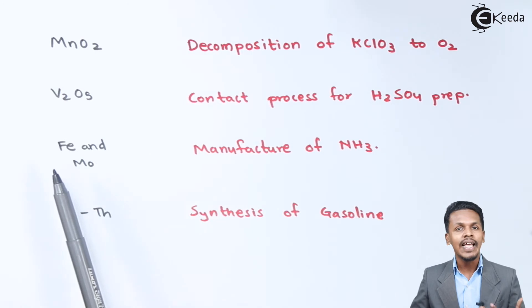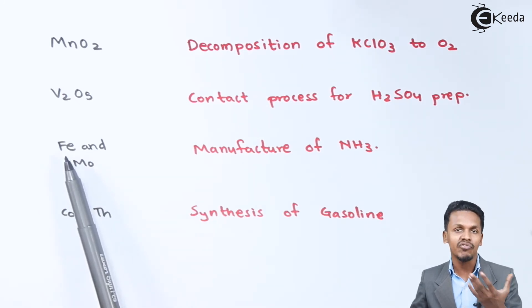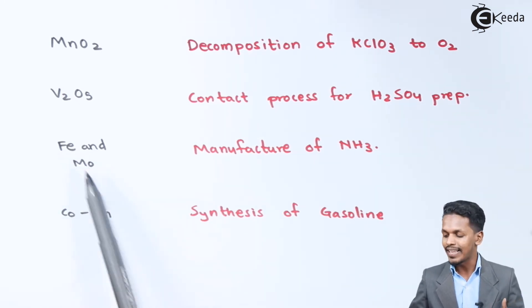Iron and molybdenum, two transition elements - Fe is a 3D transition series element - are used in the manufacturing of NH3 by Haber's process.